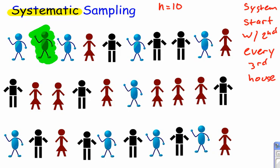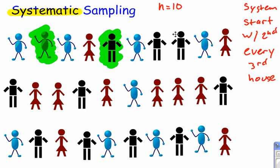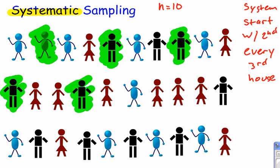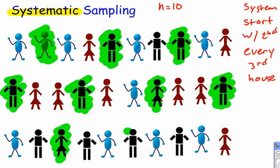So here we go. I start with my second house, then skip to every third house — counting 1, 2, 3 — and interview that person. I continue this pattern: 1, 2, 3, interview; 1, 2, 3, interview; repeating until I have counted through the population. After going through the process, I should have my 1, 2, 3, 4, 5, 6, 7, 8, 9, 10 — there is my sample size of 10.